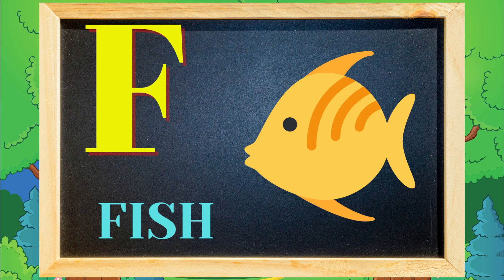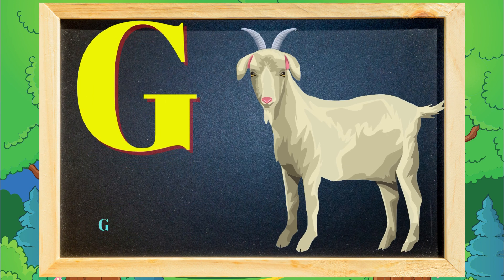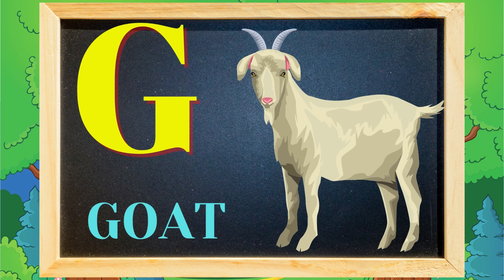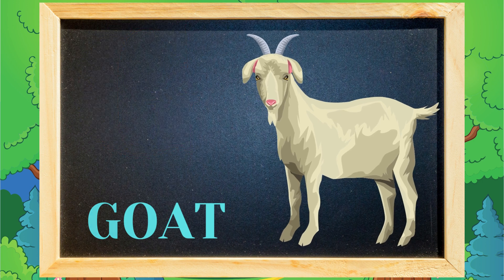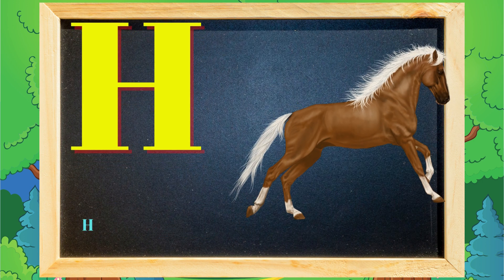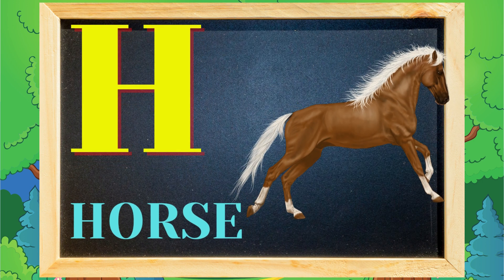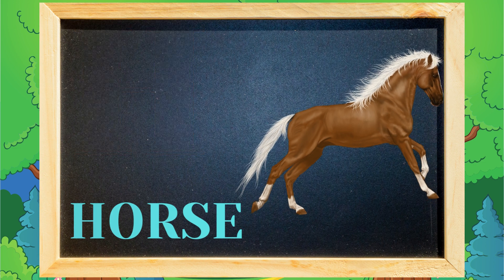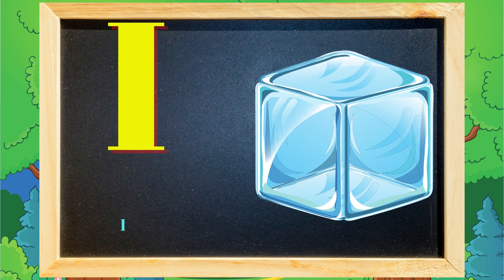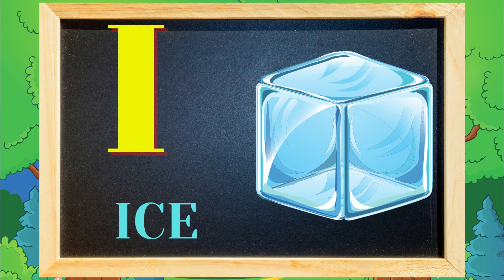G for goat, goat means pakri. H for horse, horse means ghoda. I for ice, ice means birth.